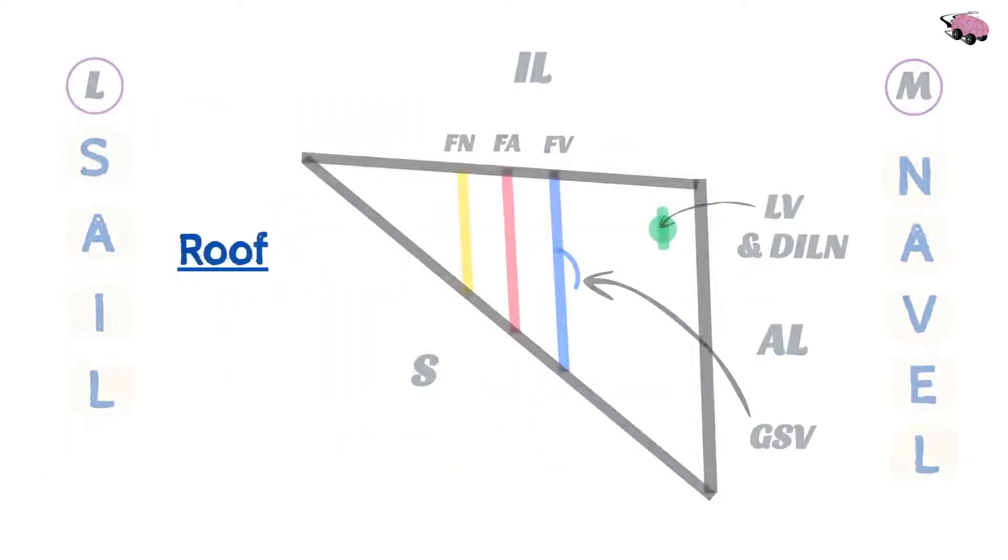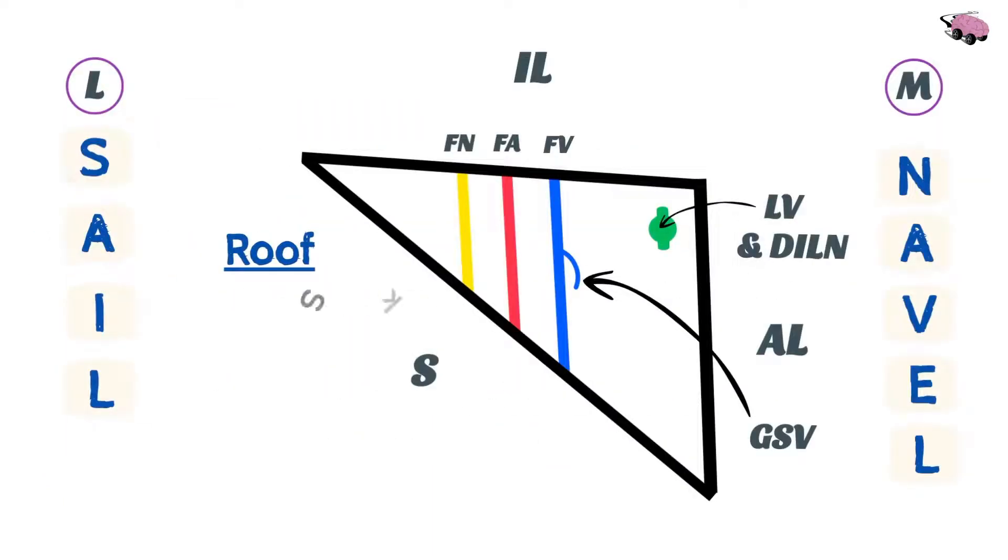Now let's go over some important things to know. The roof of the femoral triangle is made up of the skin and the fascia. The floor of the femoral triangle from lateral to medial is the iliopsoas muscle, middle part is the pectineus muscle, and the most medial part is the adductor longus muscle.